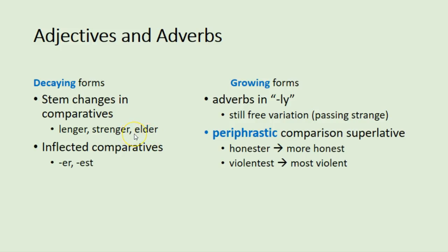We don't often talk about somebody being an elder brother — it has an archaic ring to it. But we can talk about our elders. So when you make a noun out of the adjective, you might see that. But otherwise these don't often survive.